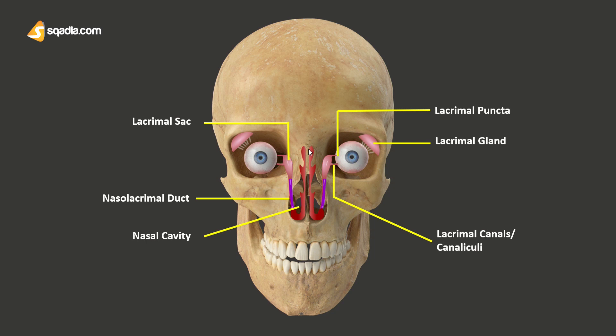It is also said to be located at the medial wall of the orbit. Before moving forward and discussing the articulations of the lacrimal bone, let's recall all the facial bones since they're all correlated to each other, so it's very important to know them as well.